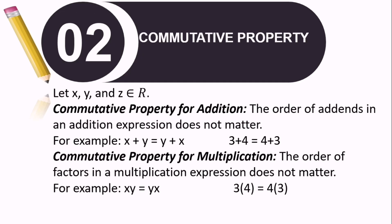Number 2 is the commutative property. Let X, Y, and Z be elements of real numbers. For commutative property for addition, the order of addends in an addition expression does not matter. For example, X plus Y is equal to Y plus X. In numbers, 3 plus 4 is equal to 4 plus 3. Even if the numbers are reversed, as long as addition is the operation used, the answer will be the same. For commutative property for multiplication, the order of factors in a multiplication expression does not matter. 3 times 4 equals 4 times 3 — the answer is the same.